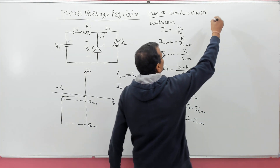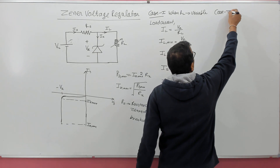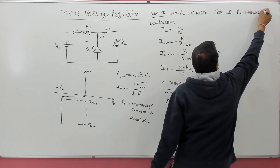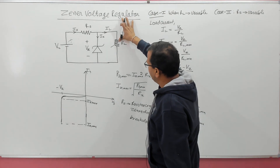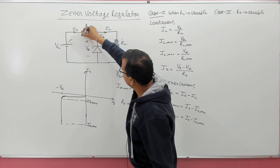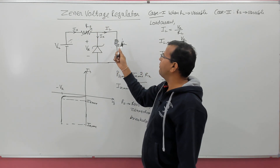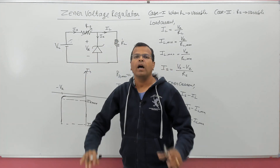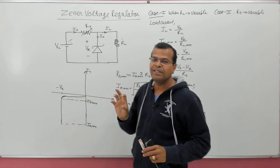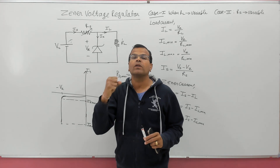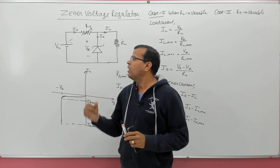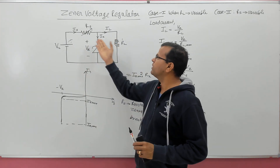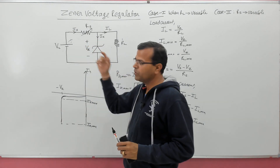Case 2: RS is variable. RL is fixed. These are not standard analyses but approaches to solve exam questions — out of the three parameters, any one may be variable, and accordingly you may need to find the range of load resistance, source resistance, or source voltage.